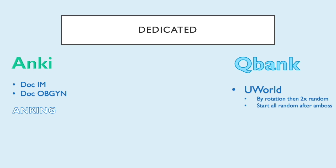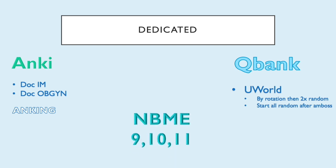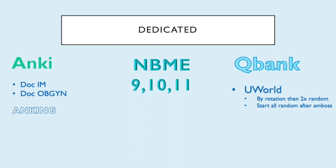If you were doing AMBOSS, switch to UWorld and finish it. If you were already doing UWorld, do it a second time and repeat your incorrects, because UWorld is the single best resource for Step 2 CK. You'll also need to do the NBME self-assessments — Forms 9, 10, and 11 — spacing them roughly every two weeks across a six-week dedicated period.